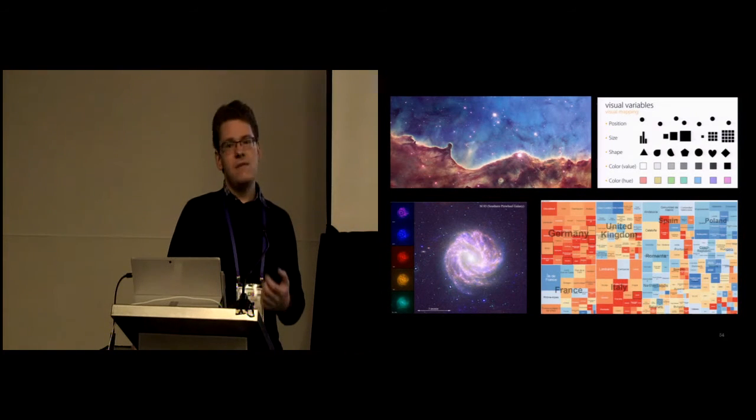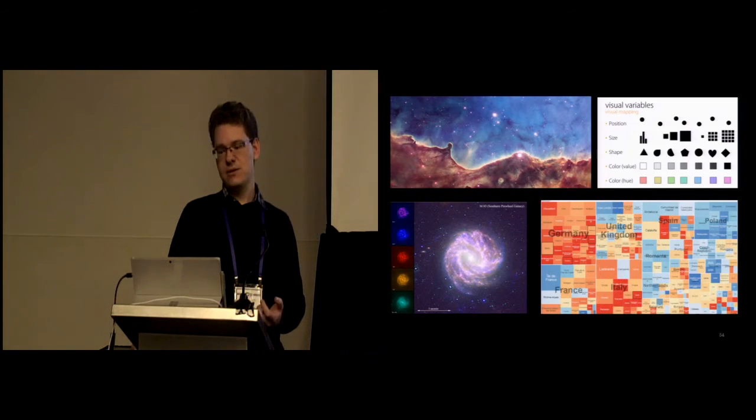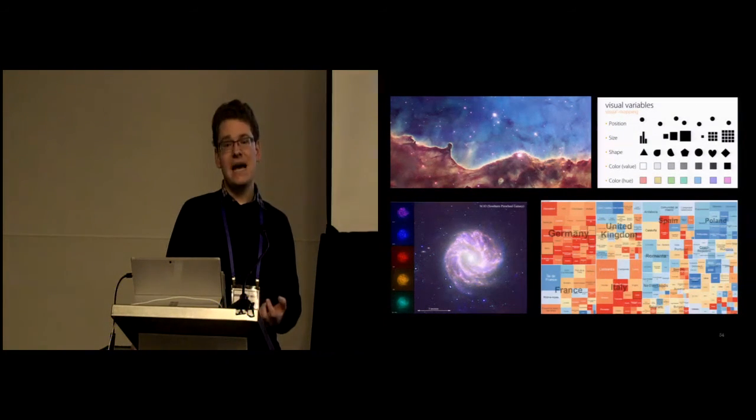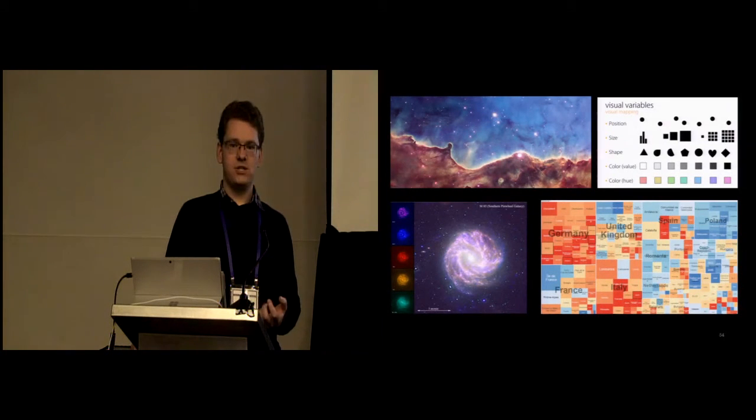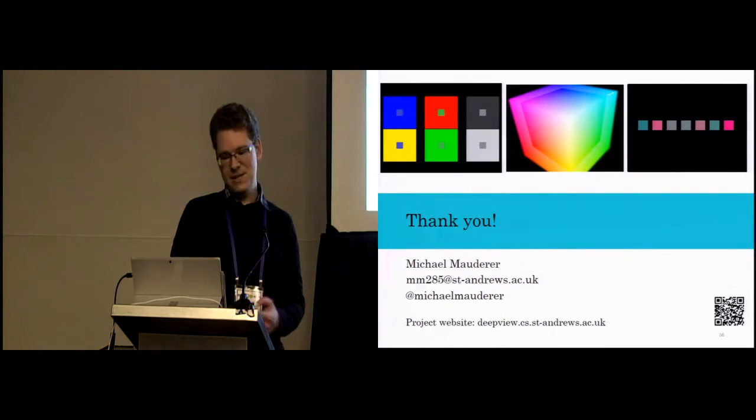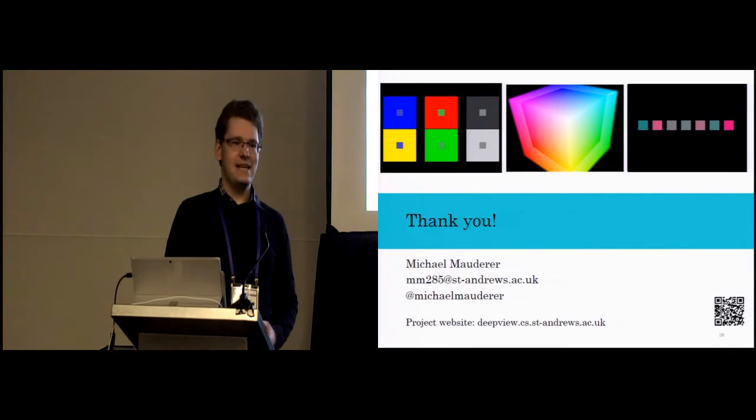But overall, to sum it up, while we don't know everything yet that is to know about gaze-contingent contrast and manipulation of color, we do know that we can employ gaze-contingent simultaneous contrast, and we do know that we can employ it to make colors more differentiable in a basic way. So, thanks for your attention, and I'm happy to take any questions.